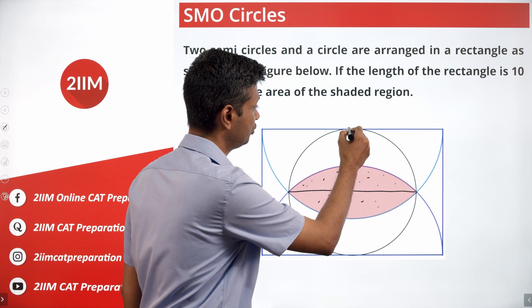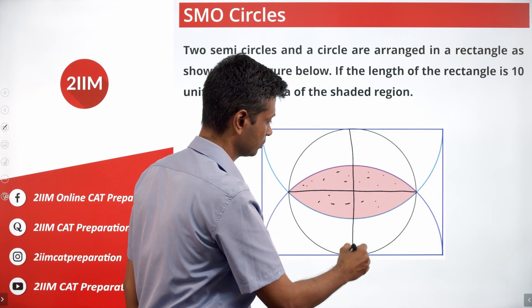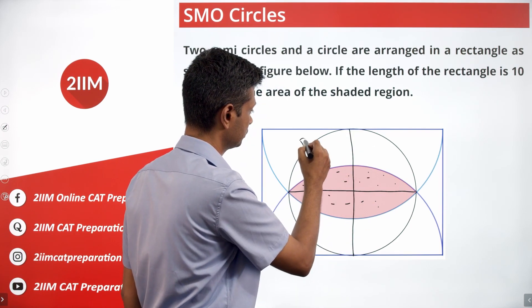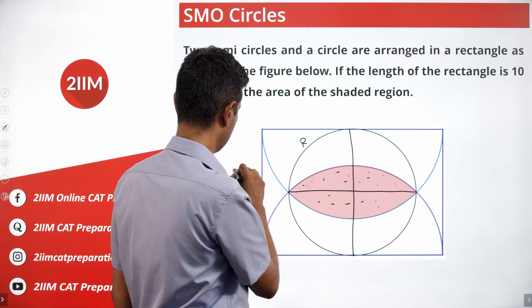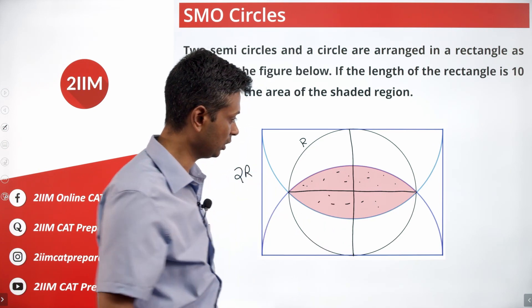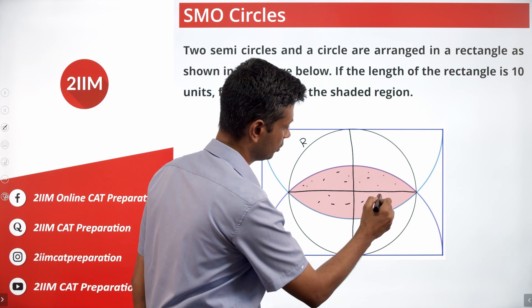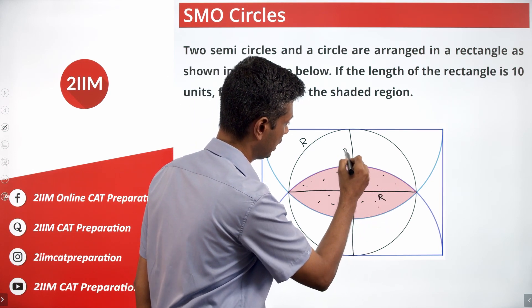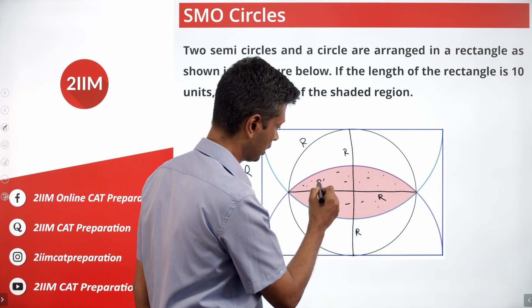Let's say the radius of this circle is R. So, this is R, this is R, this side will be 2R. Simply, this is R, this is R, R, R.